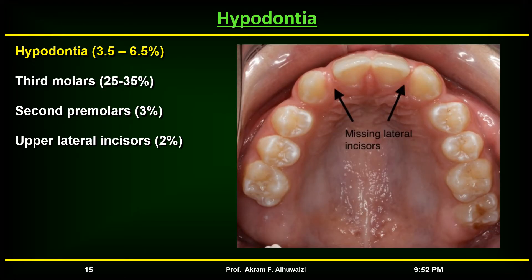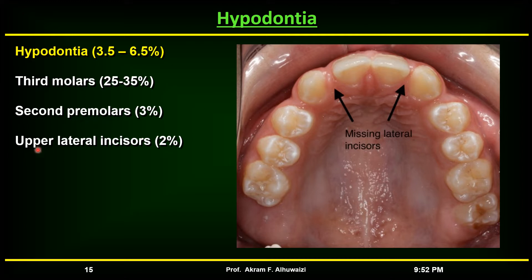Hypodontia, which is the congenital absence of one or more teeth, occurs in Caucasian populations at around 3.5 to 6.5 percent, excluding third molars — one or more third molars is missing in about 25 to 35 percent of the population. This is followed by second premolars at three percent and upper lateral incisors at two percent. These can all be bilateral or unilateral.